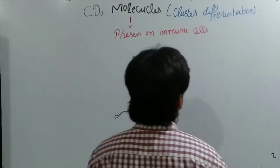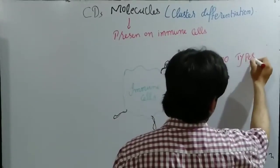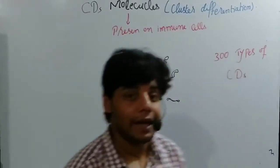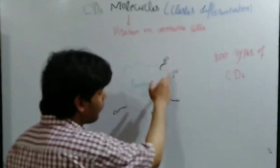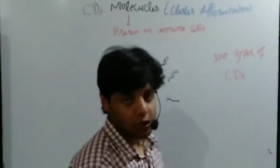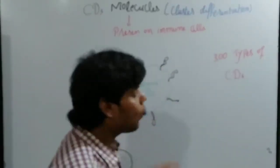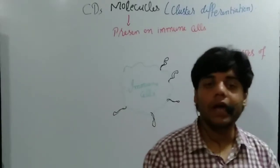These CD molecules have both biological and diagnostic significance. Whenever CD molecules are present on the cell surface of immune cells, we can determine the cell's identity. For example, if an immune cell has CD4 molecules, we can identify it as a cell that interacts with HIV virus.